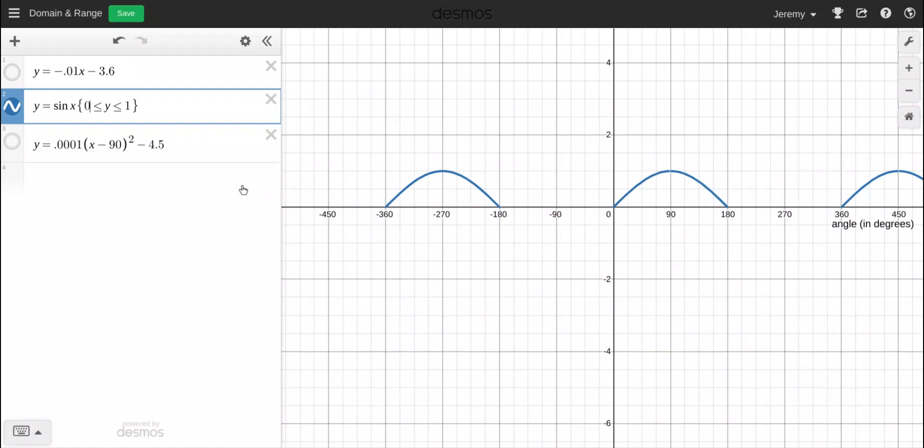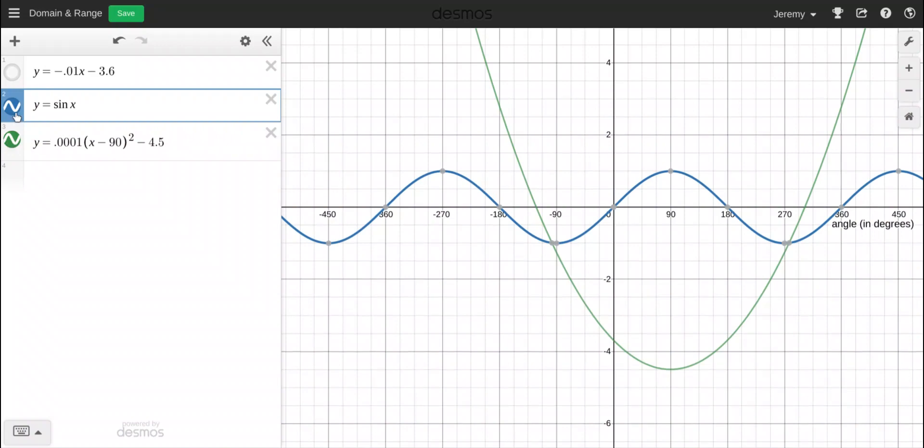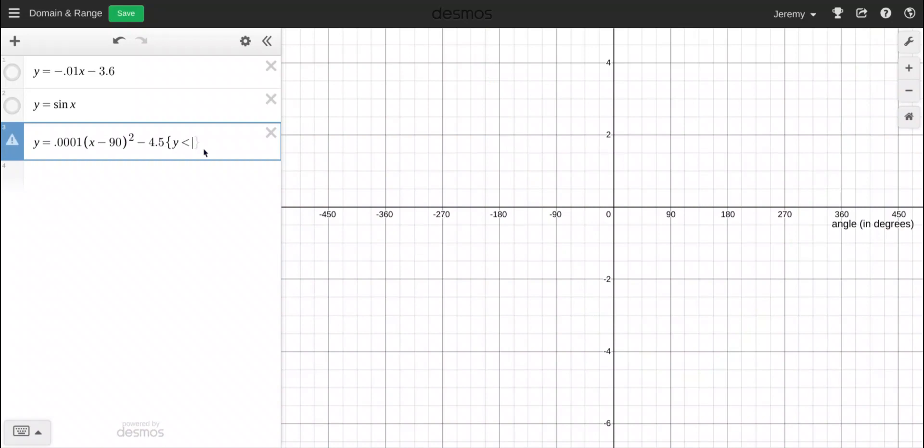Okay, if I now want to go to this parabola, and what I want to do is I want to restrict it on both ends. If I do something like this, the Y has to be less than or equal to three. I get a smiley face kind of situation.